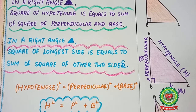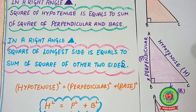One question that may come to your mind is: for what purpose do we use this Pythagoras theorem? Pythagoras theorem is generally used for finding the unknown sides of a right-angle triangle. We will do a couple of examples in which we will find the unknown sides of a right-angle triangle using this theorem.